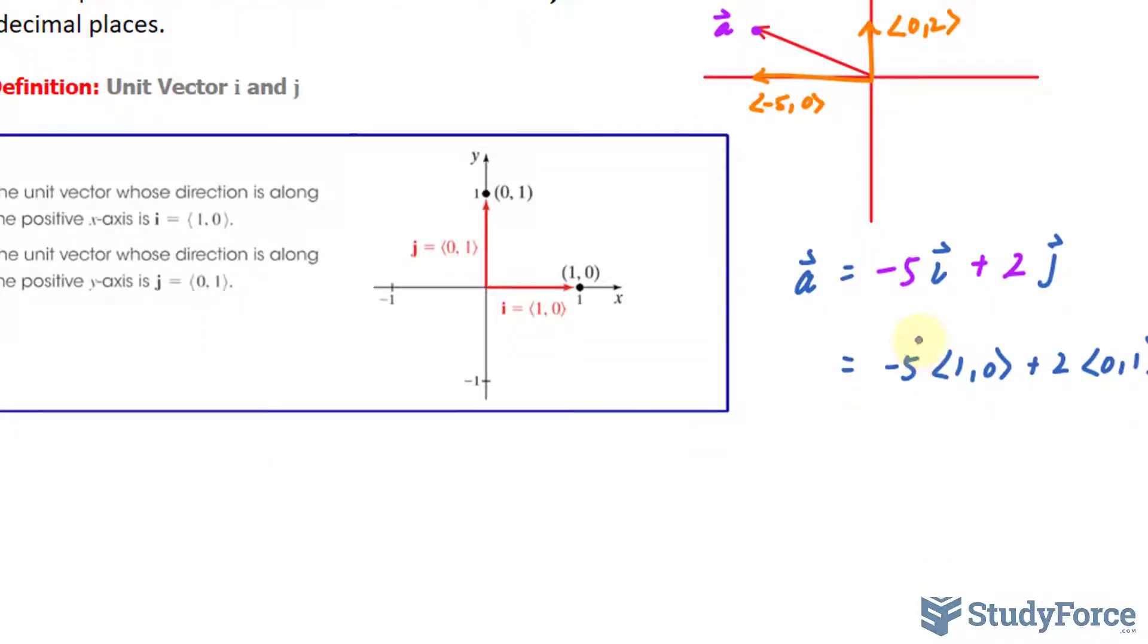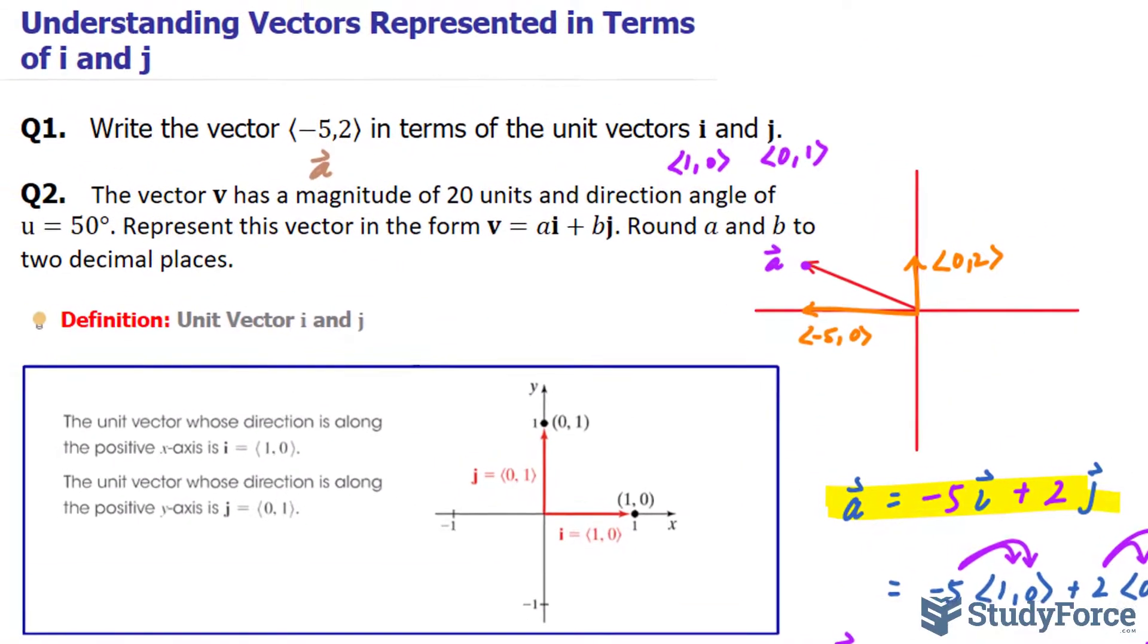and I multiply -5 into this unit vector, using the properties of vectors, this becomes (-5,0), and this becomes (0,2). So by adding these two vectors together, we end up with our vector a. So what you see right here is how you'd write the vector a in terms of i and j.